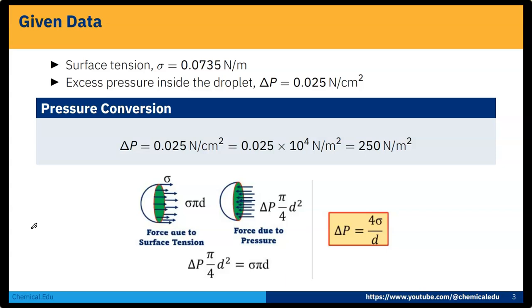First we have to convert Newton per centimeter square to Newton per meter square. Del P is 0.025 Newton per centimeter square. If we convert to Newton per meter square, that will be 0.025 times 10 to the power 4, which equals 250 Newton per meter square.